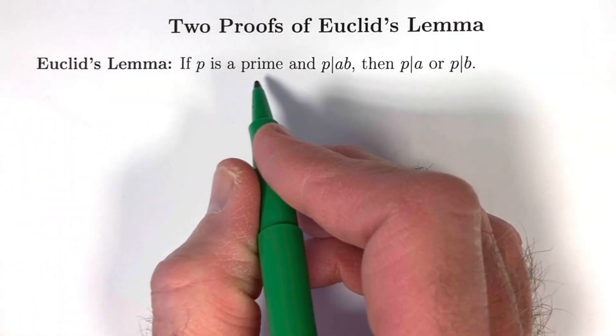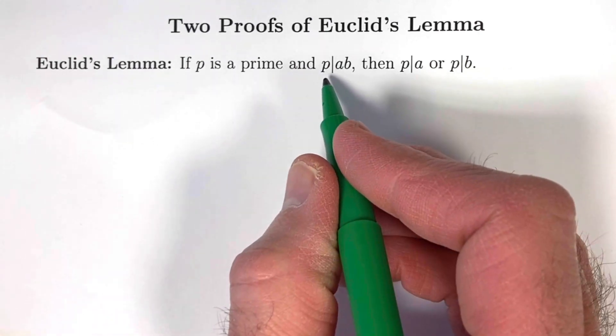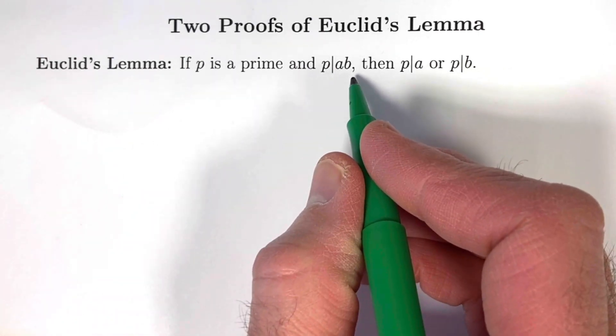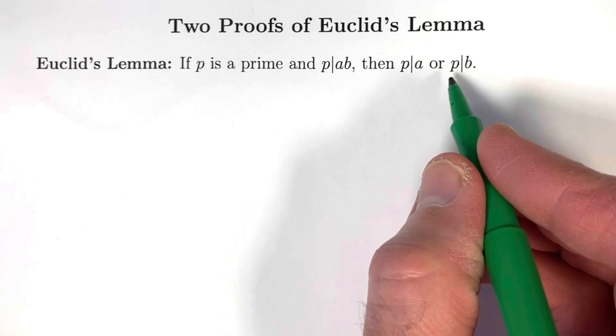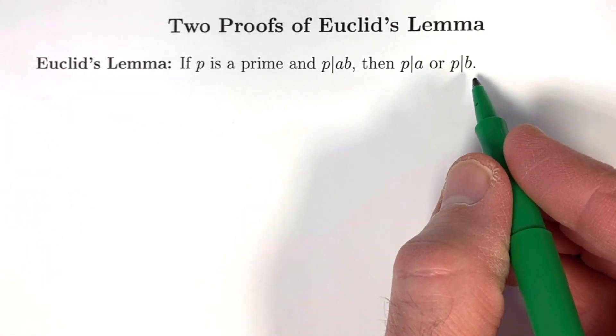Euclid's Lemma states that if p is a prime number, and p divides the product a times b, then p either divides a or p divides b, or it could divide both.